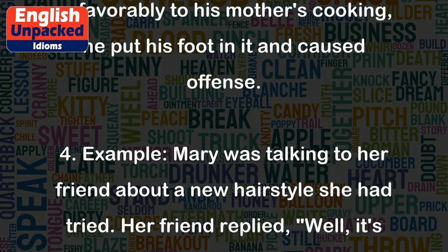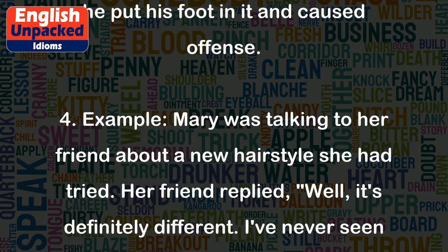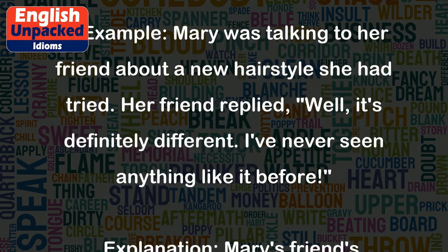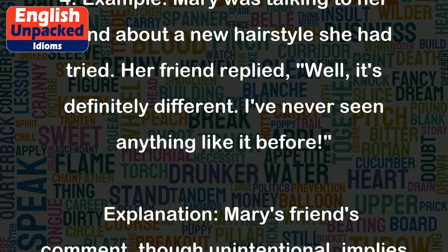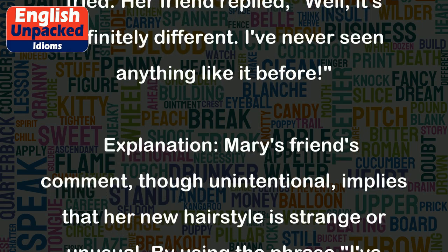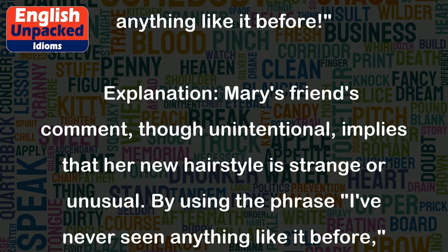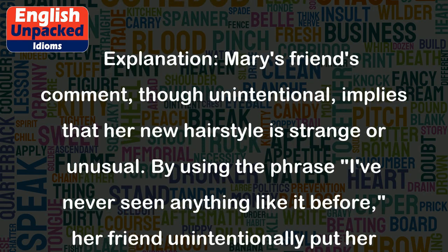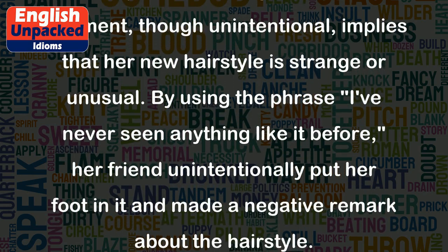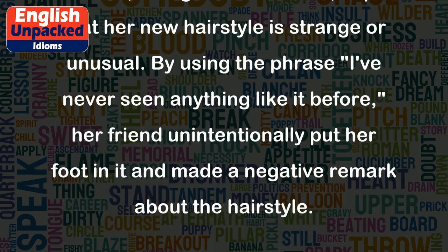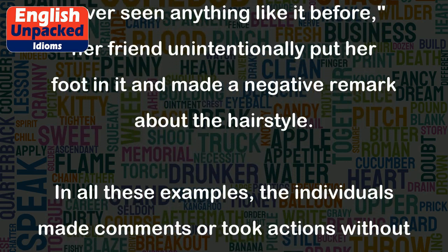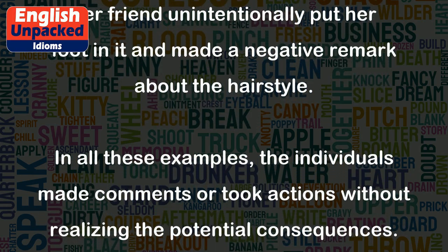Example 4: Mary was talking to her friend about a new hairstyle she had tried. Her friend replied, 'Well, it's definitely different. I've never seen anything like it before.' Mary's friend's comment, though unintentional, implies that her new hairstyle is strange or unusual. By using the phrase 'I've never seen anything like it before,' her friend unintentionally put her foot in it and made a negative remark about the hairstyle.